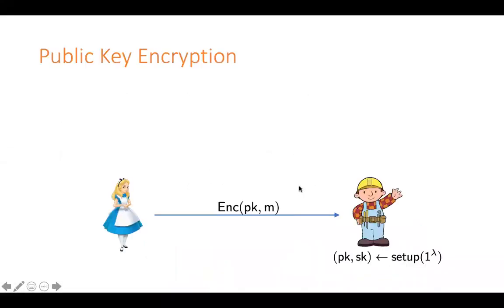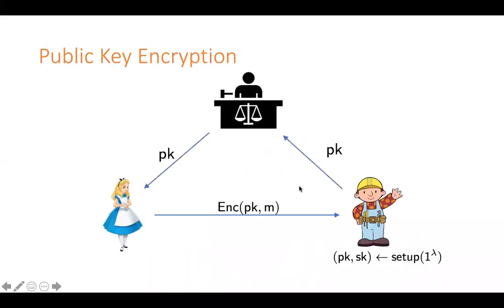Let's start with public key encryption. Here Alice wants to encrypt a message to Bob. For this we typically use public key infrastructure where there is an authority that gives Bob's public key to Alice. The problem with this is Alice needs to contact the authority every time she needs to talk to someone, and moreover this authority could be corrupt and could be giving wrong keys to Alice.